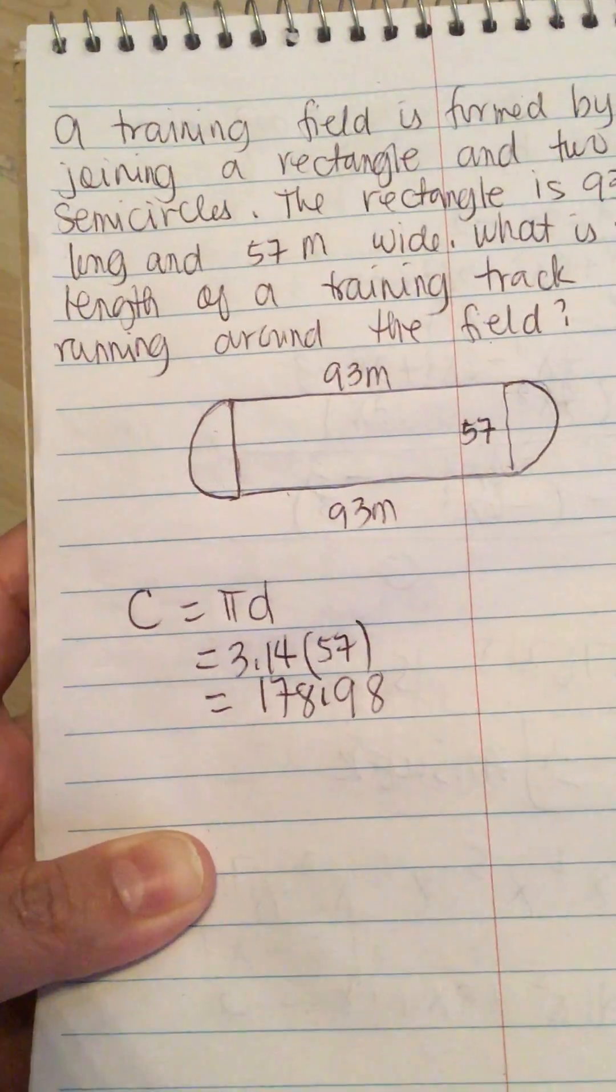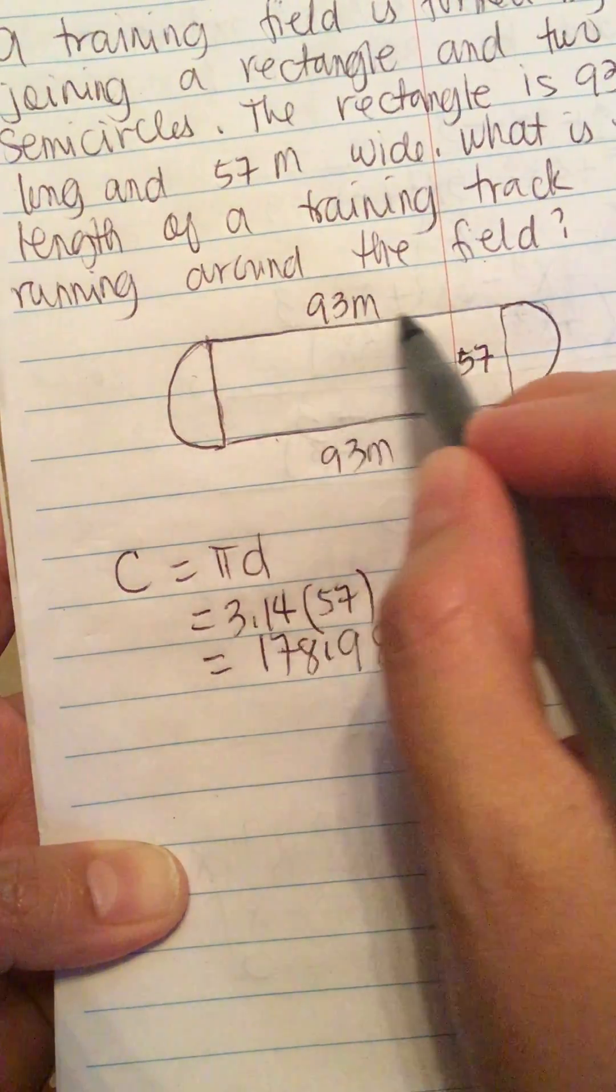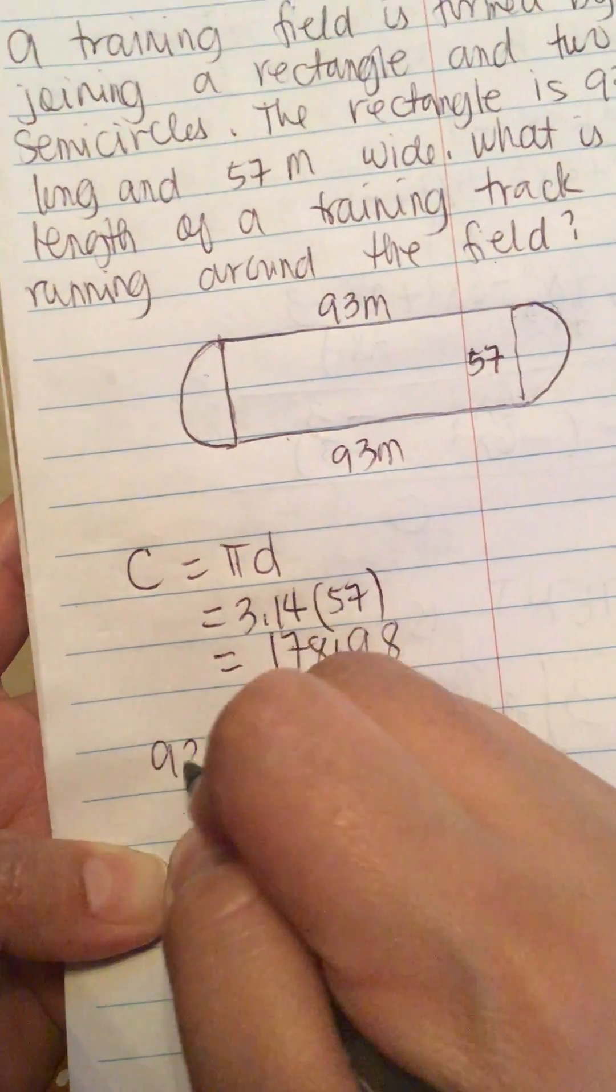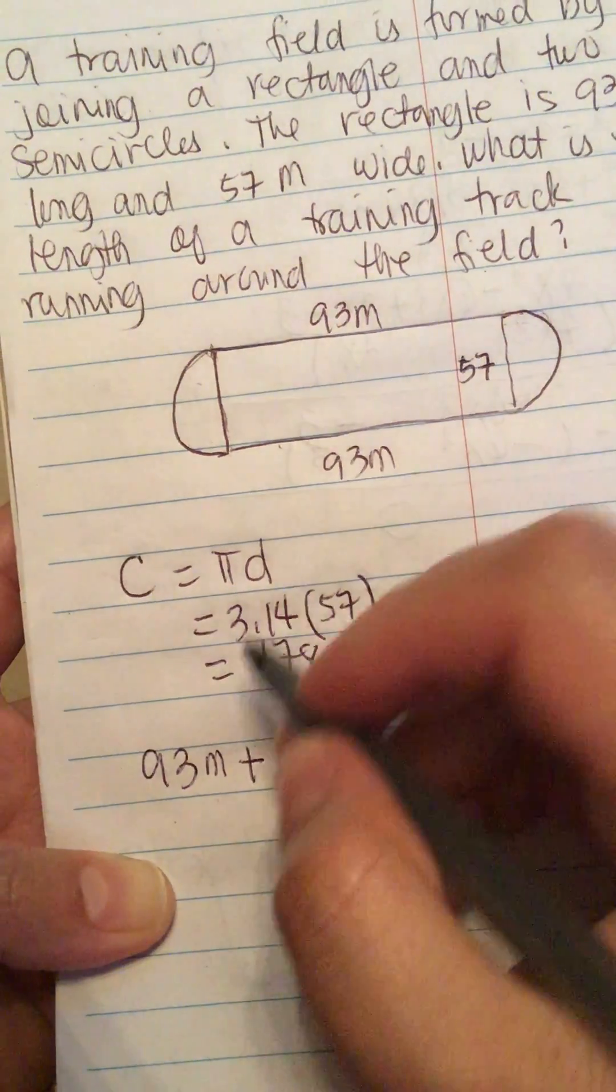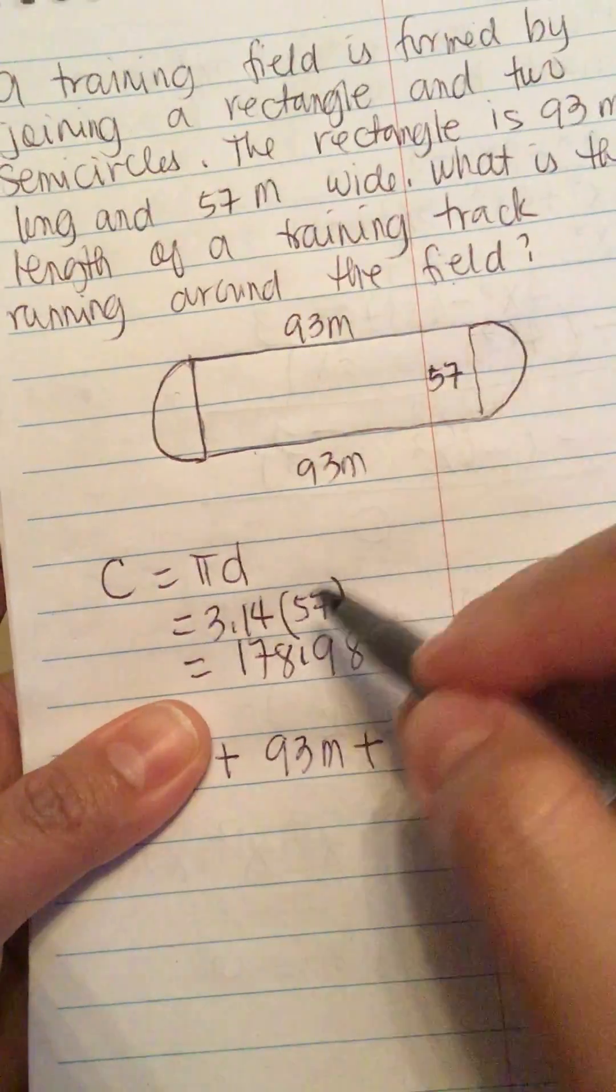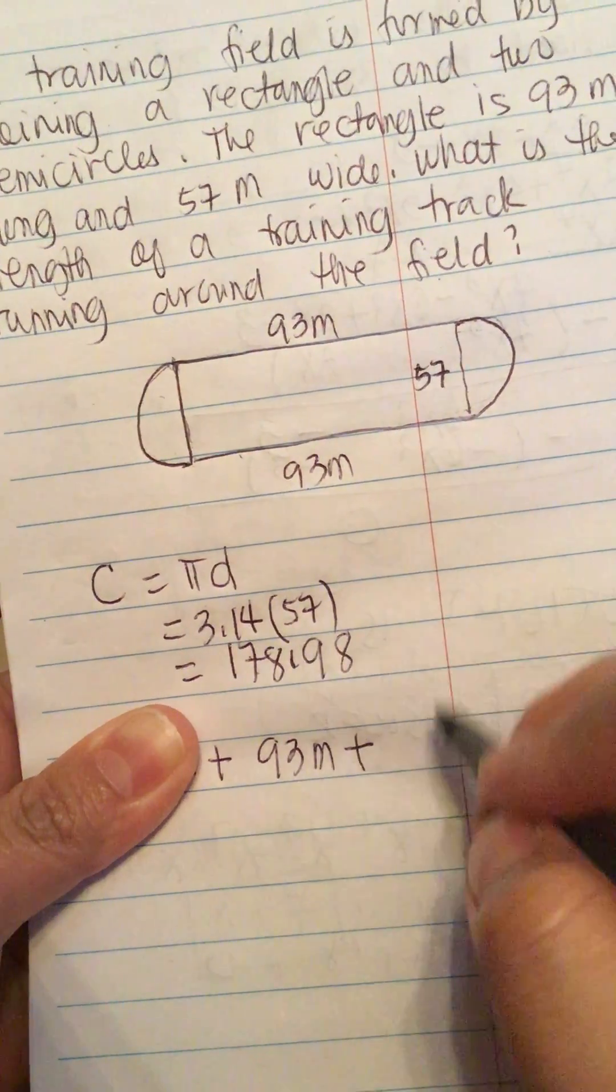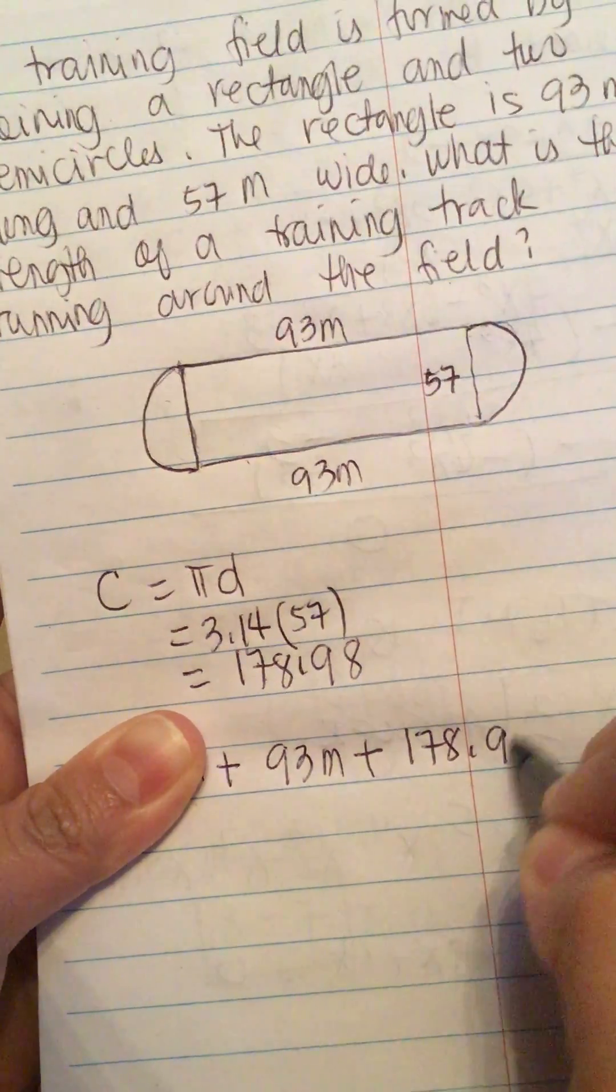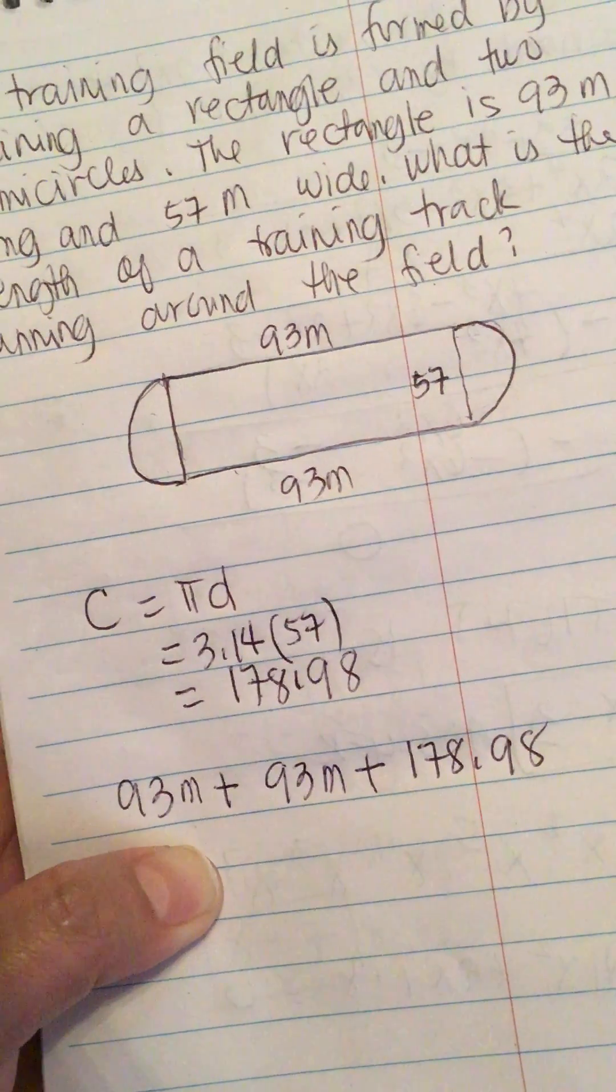...of the training track. We have 93 meters plus 93 meters at the bottom, so 93 meters, plus the whole circle which is 178.98. Then we add these numbers, so we have 93 plus 93 plus 178.98 equals 364.98 meters. So the whole length, or the...